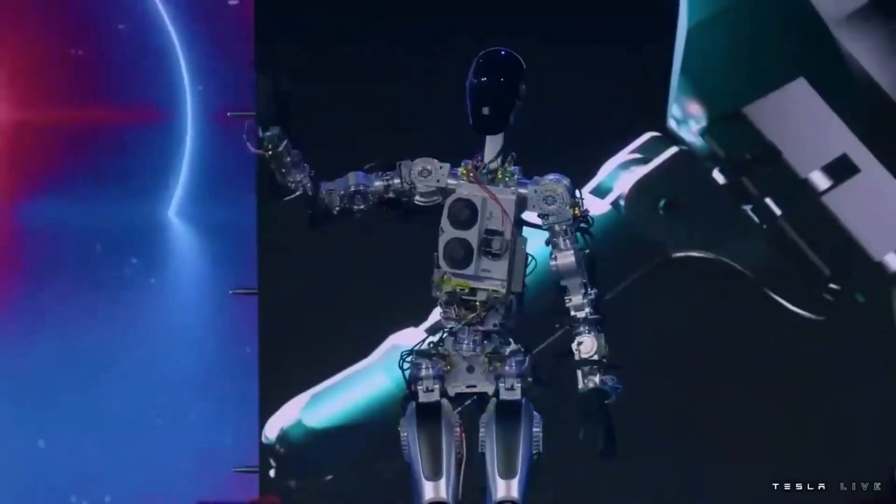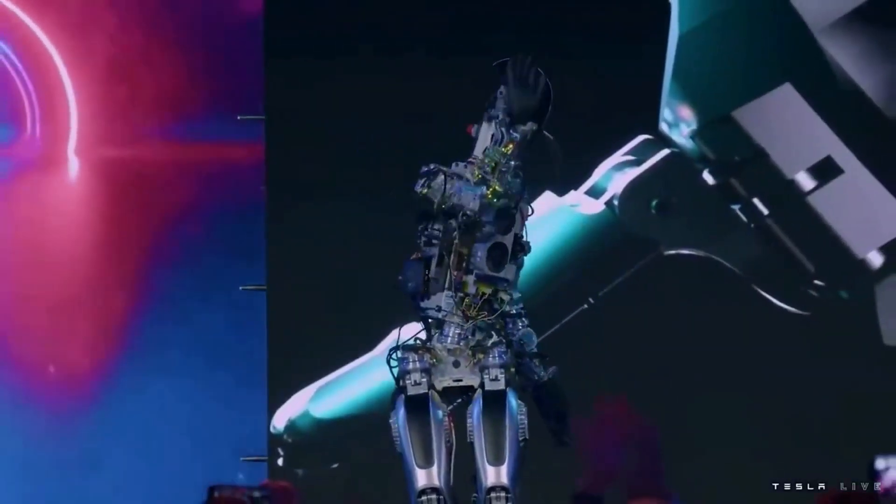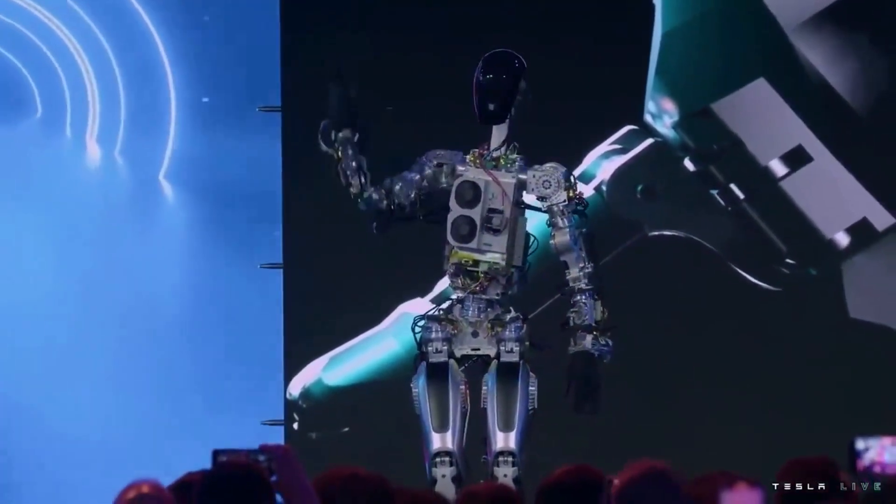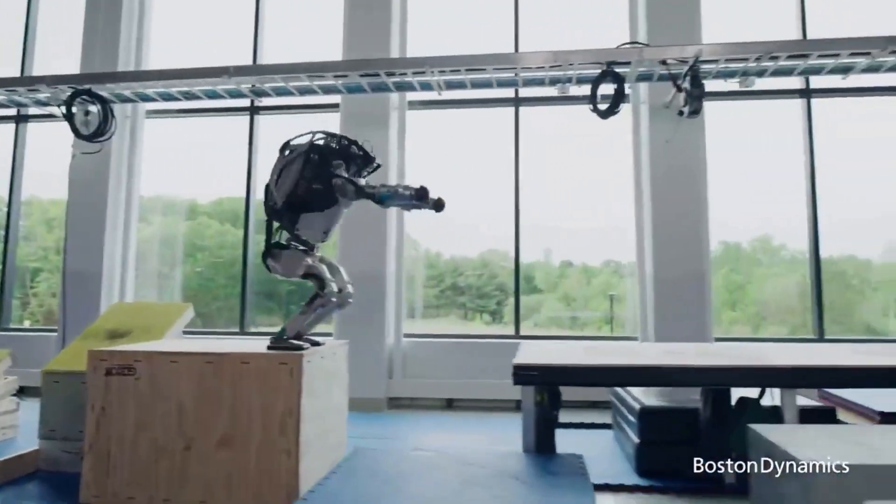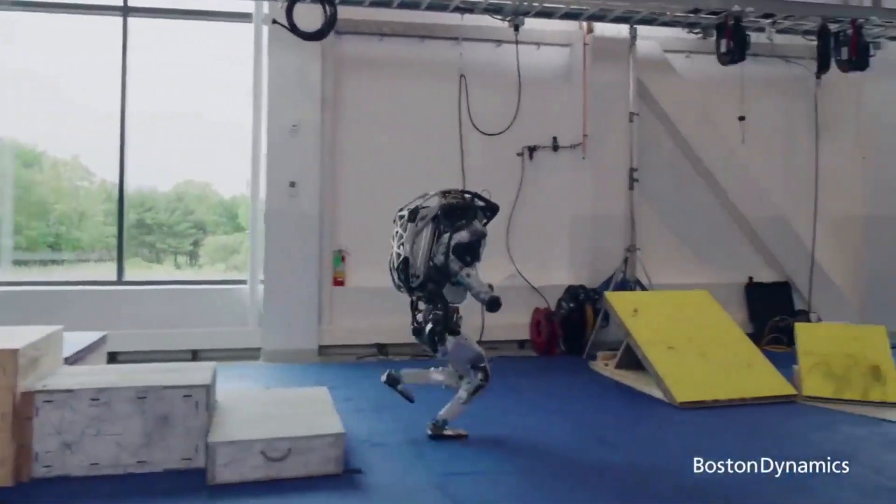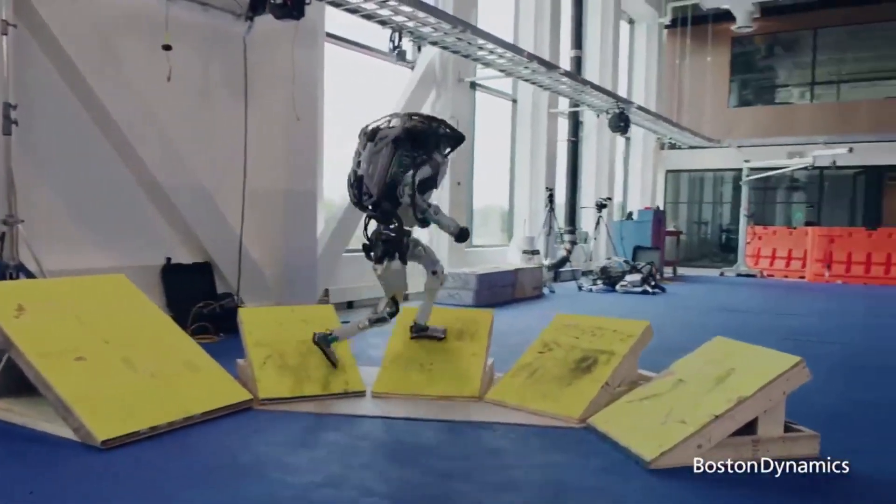What Optimus lacks in athleticism it will more than make up for with intelligence and versatility, and that's where the Tesla bot starts to pull away from the competition. As Elon said, other humanoid robots lack a brain. They may be able to do some parkour, but they cannot navigate the world autonomously.